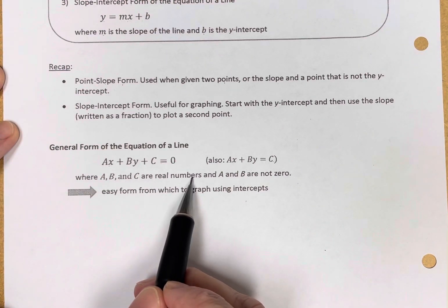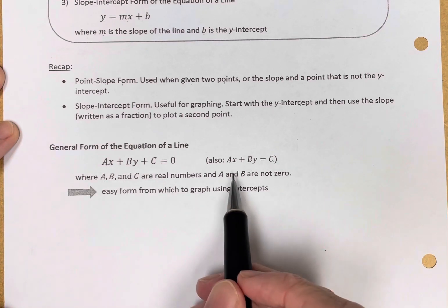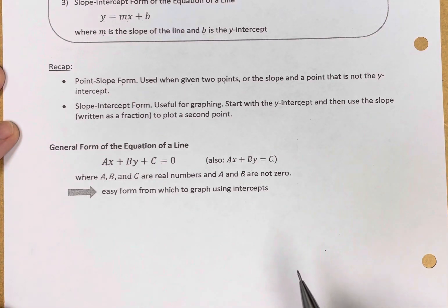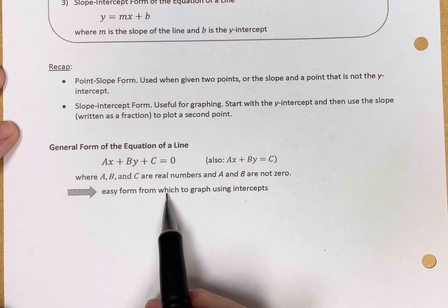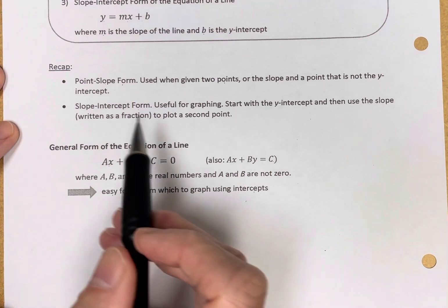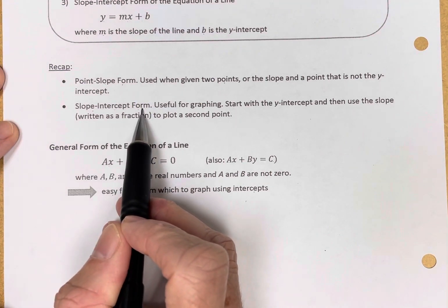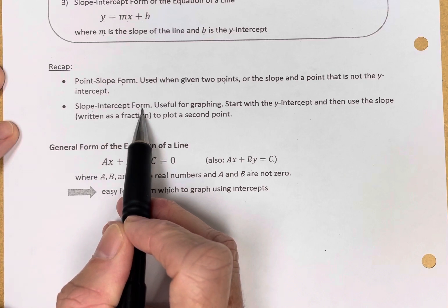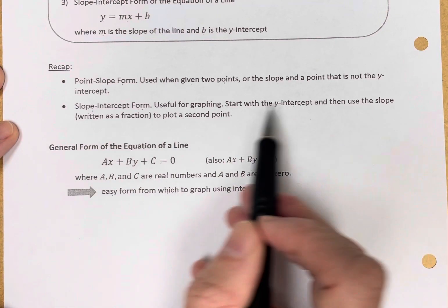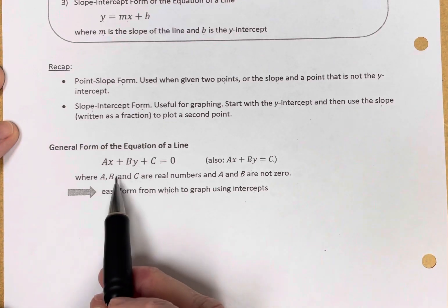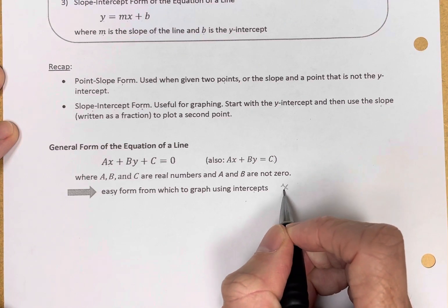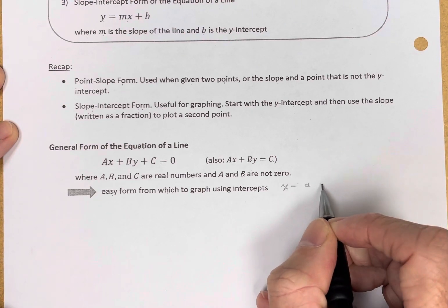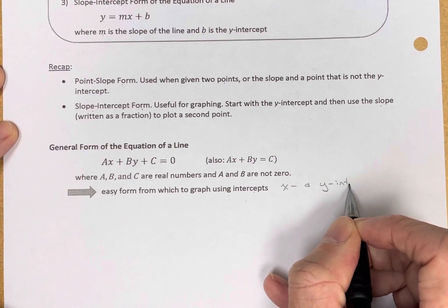In general, the x's and the y's are together on one side of the equation. A, B, and C are real numbers, and A and B cannot be zero, otherwise you've created horizontal or vertical lines. It is an easy form from which to graph using intercepts. This form, you simply use the y-intercept and the x-intercept.